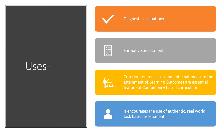Criterion reference assessment that measures the attainment of learning outcomes is an essential feature of competency-based curriculum. NCRT and CBSC have both recommended competency-based curriculum, in which criterion reference assessment is very useful. It also encourages authentic, real-world task-based assessment, where we plan rubrics and guidelines as a set of criteria to evaluate students' performance on certain activities.